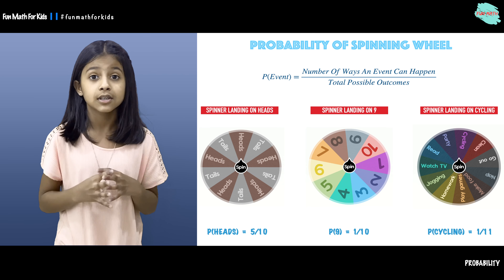These are 3 examples of finding the probability of a spinning wheel. That is all for today. Thanks for watching!